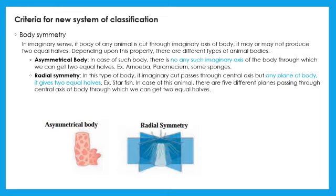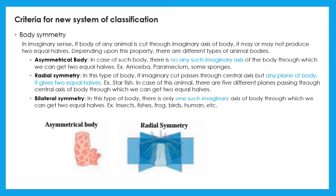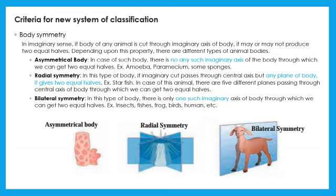In bilateral symmetry, we get two equal halves through one imaginary axis. For example, insects, fish, dog, human, etc.